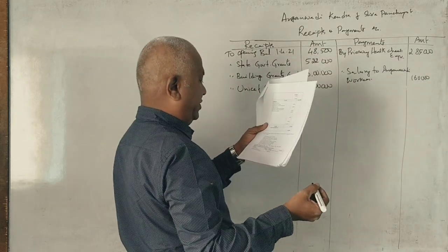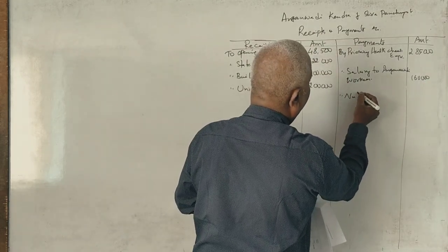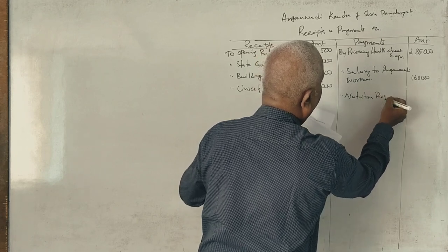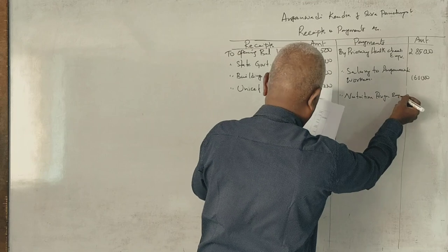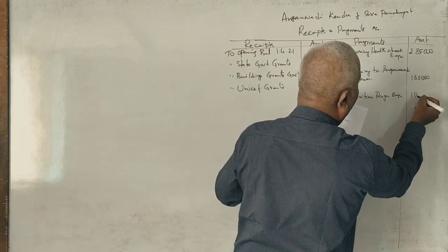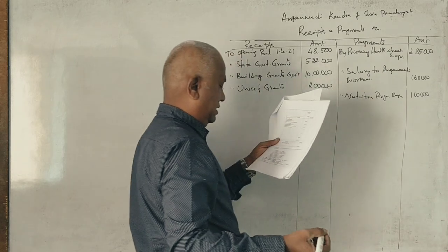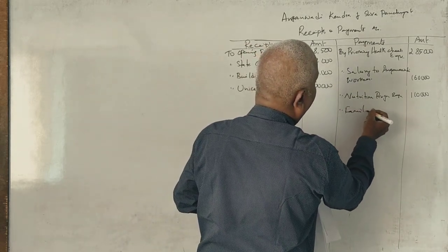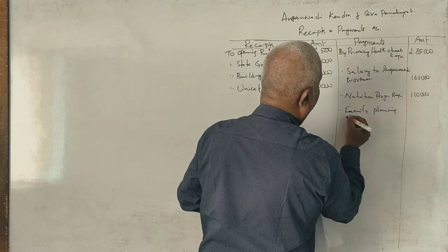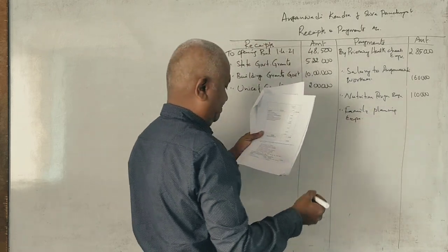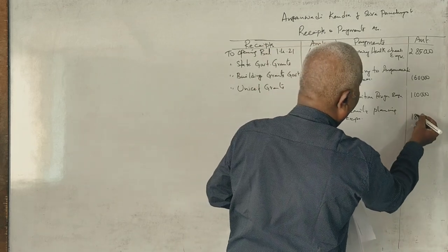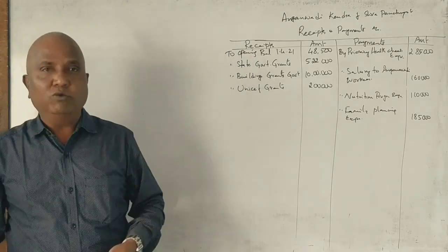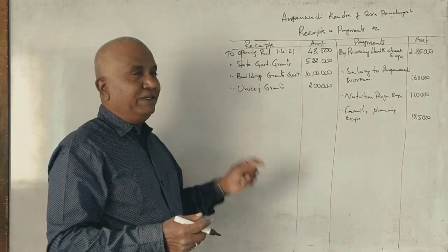Nutrition program expenses: Rs. 1,10,000. Family planning expenses: Rs. 1,85,000. Depreciation on building: Rs. 1,50,000.